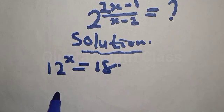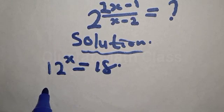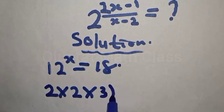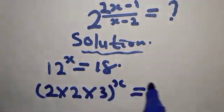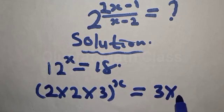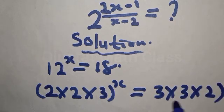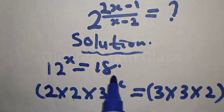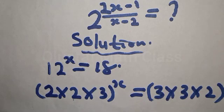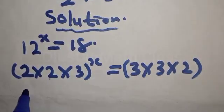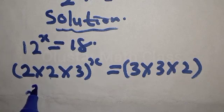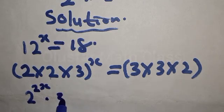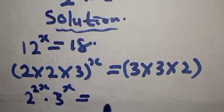We have 12 raised to power x equal to 18. This can be expressed as 2 times 2 times 3, raised to power x, equal to 18 expressed as 3 times 3 times 2. So 2 times 2 is 4, times 3 is 12, raised to power x. And 18 is 3 times 3 — that is 9 — times 2, which is 18. This can be rewritten as 2 raised to power 2x, dot 3 raised to power x.